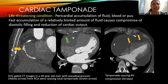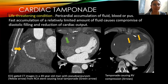Cardiac tamponade is a life-threatening condition involving pericardial accumulation of fluid, blood, or pus. Fast accumulation of a relatively limited amount of fluid causes compromise of diastolic filling and reduction of cardiac output. ECG-gated CT images in a 49-year-old man show a pseudoaneurysm (yellow arrow) from an RCA stent causing local tamponade (green arrow), and another image shows tamponade causing right heart compression.